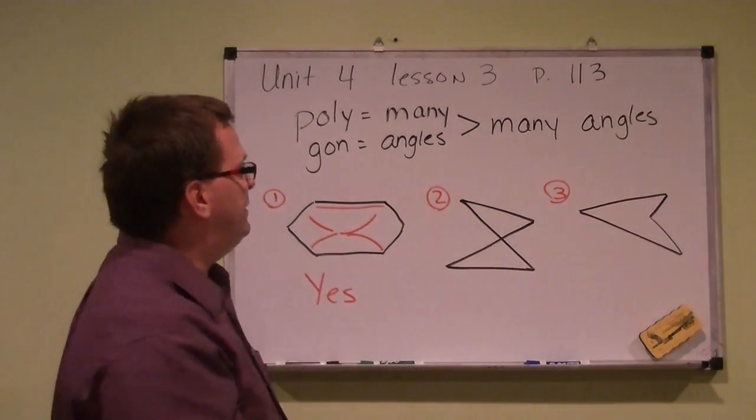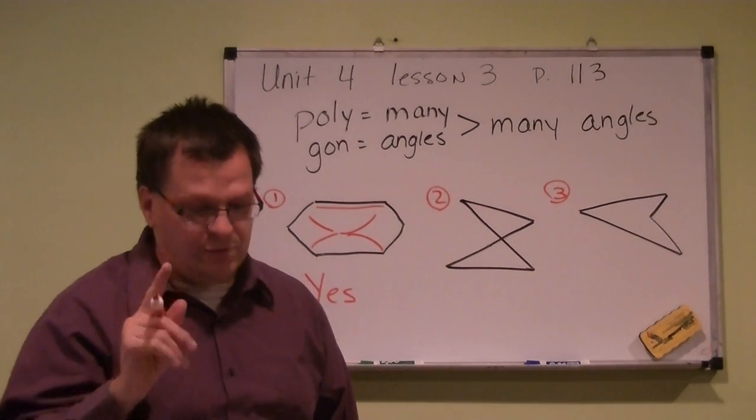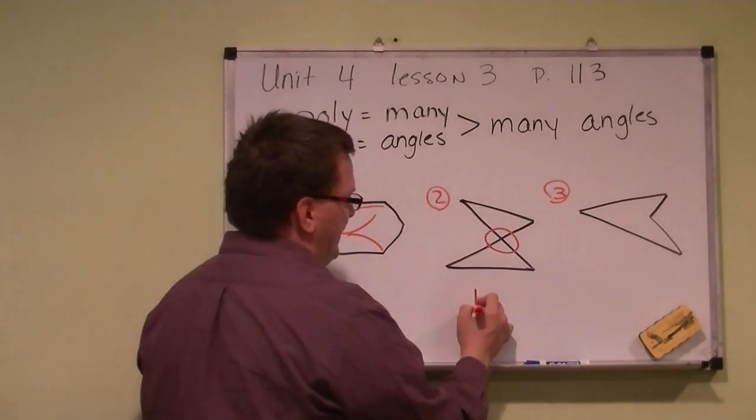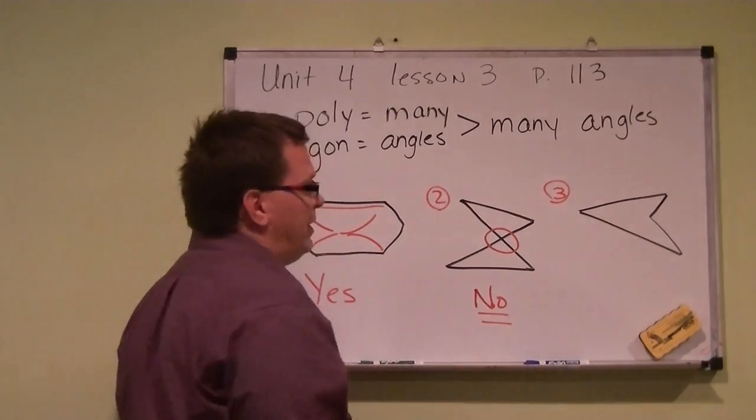This one over here, remember what I said, they do not cross. Well, it already violated the rule. It crosses right there. So that is not a polygon.